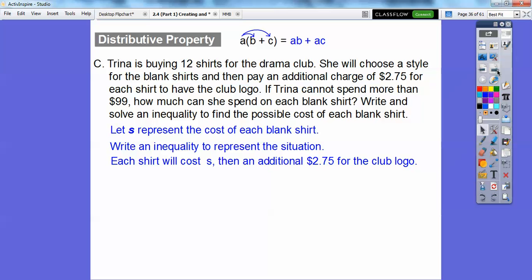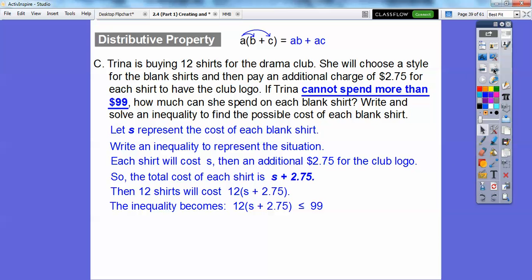So each shirt is going to cost S dollars, and then for each shirt, we're going to put an additional $2.75 for the club logo, because the club logo goes, each shirt's going to get that on there. So whatever the cost of the blank shirt is, is going to be adding the $2.75 right there. So the total cost of each shirt is S plus $2.75. Now there's 12 shirts, so we're going to multiply that times 12. So that's where we're going to use the distributive property. And then it says we cannot spend more than $99, so that would be less than or equal to.